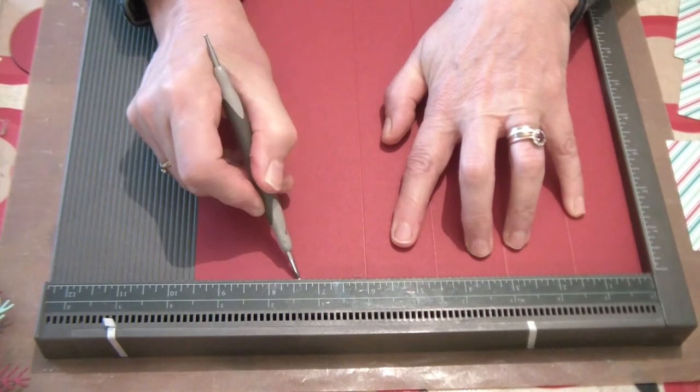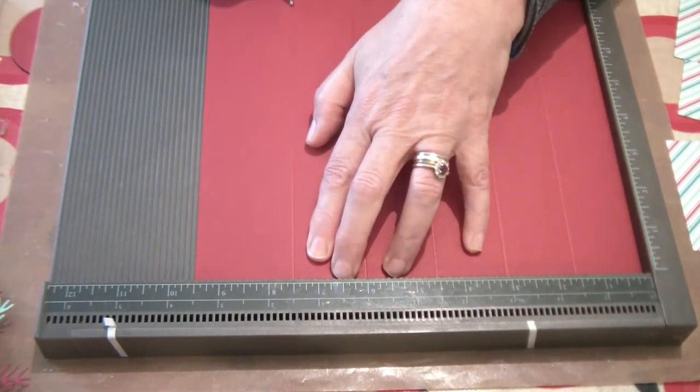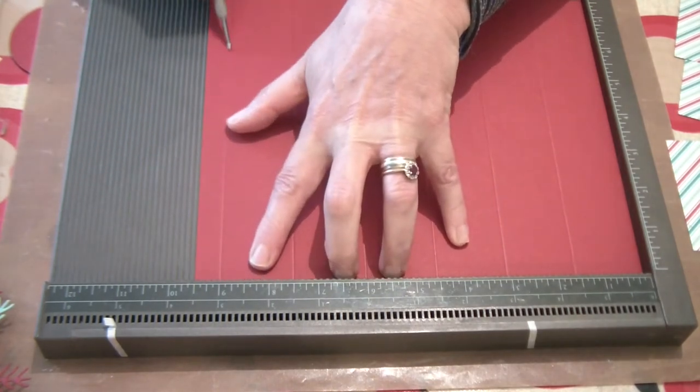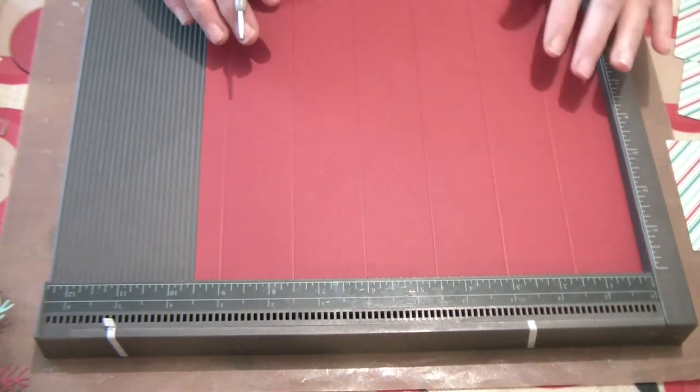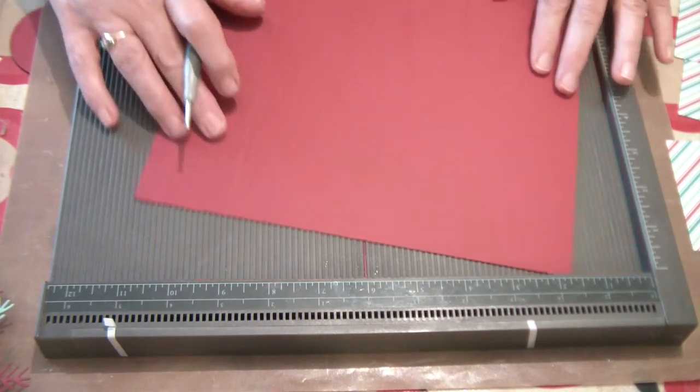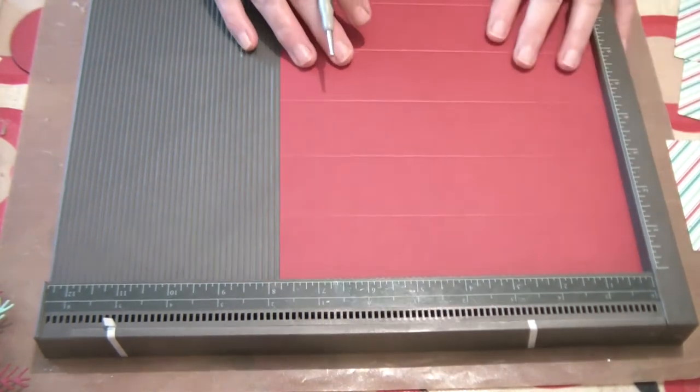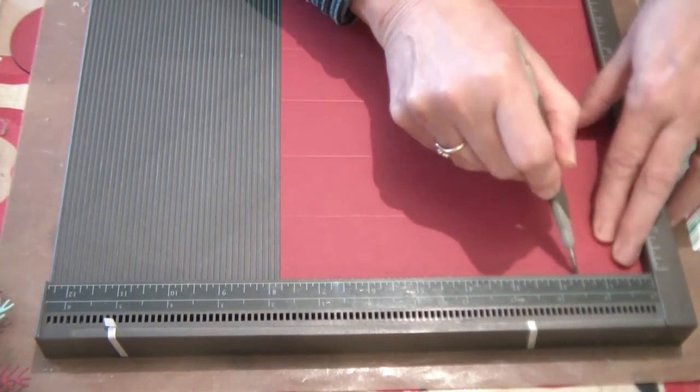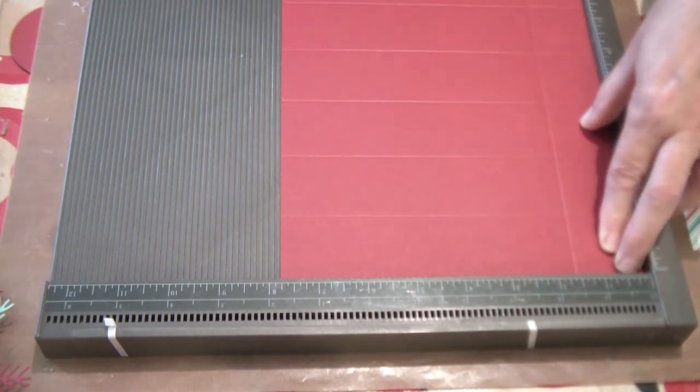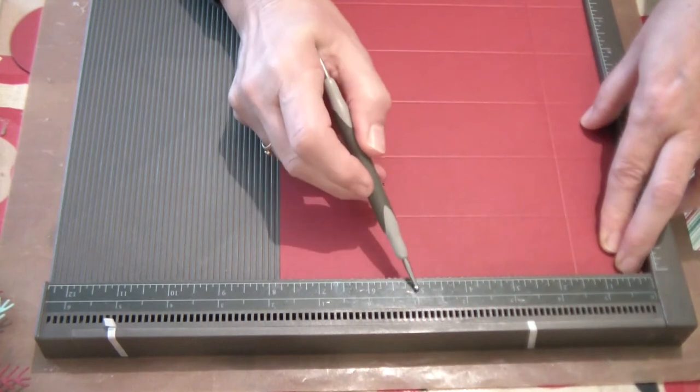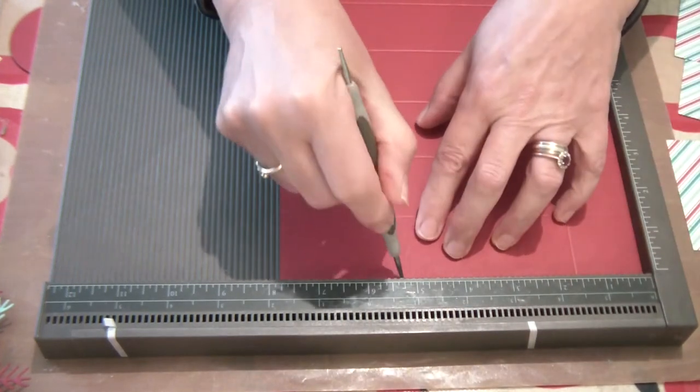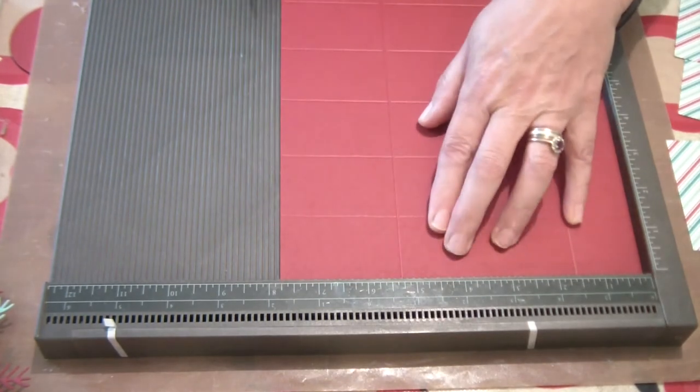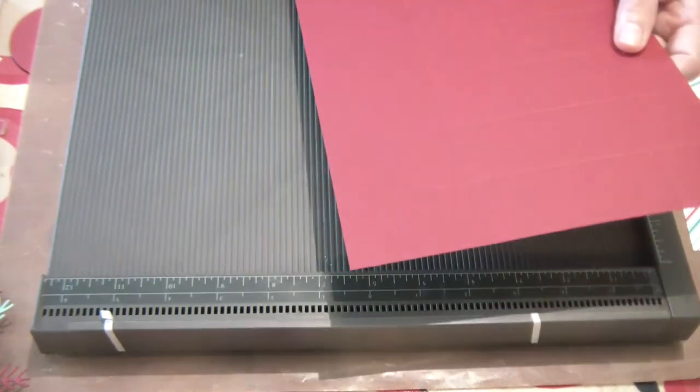So the ladies at my craft club and my crafty friends I want to see your designs so if you do have a go at making this please message me. So then you're going to turn it onto the short side and then the first score line will be at one and a half inches and then the second score line will be five and a quarter inches down there and then that's all the scoring that you need to be doing and you can put your board away.